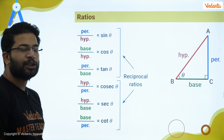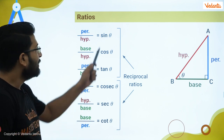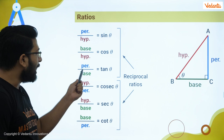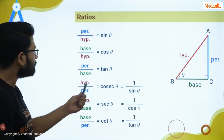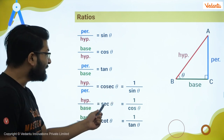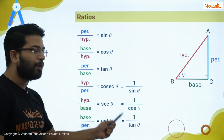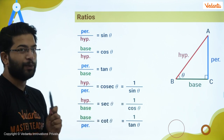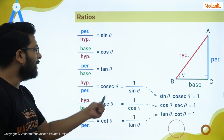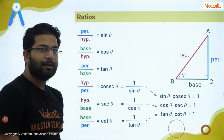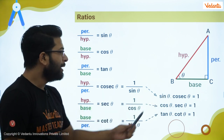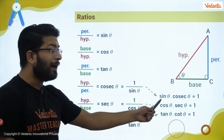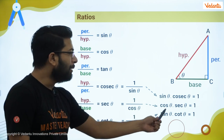The first three and last three ratios are reciprocals of each other: sin theta and cosec theta are reciprocal, cos theta and sec theta are reciprocal. So cosec theta equals one upon sin theta, sec theta equals one upon cos theta, and cot theta equals one upon tan theta. From this, sin theta times cosec theta equals one, cos theta times sec theta equals one, and cot theta times tan theta equals one — provided the angles are the same.